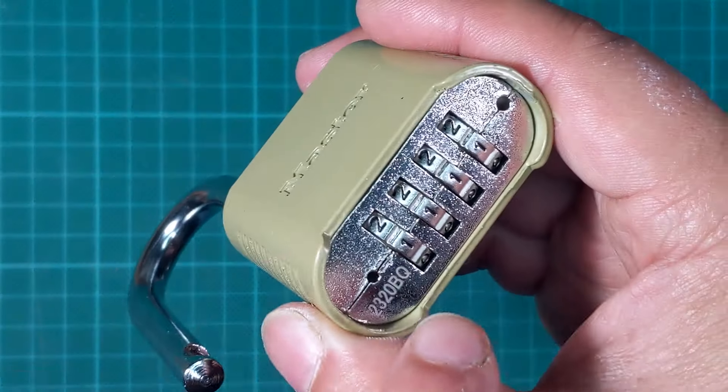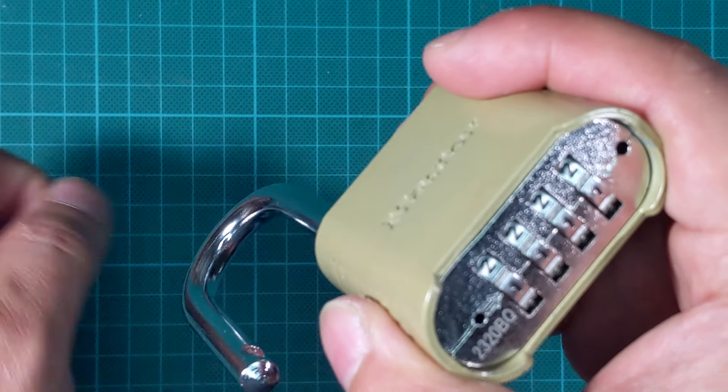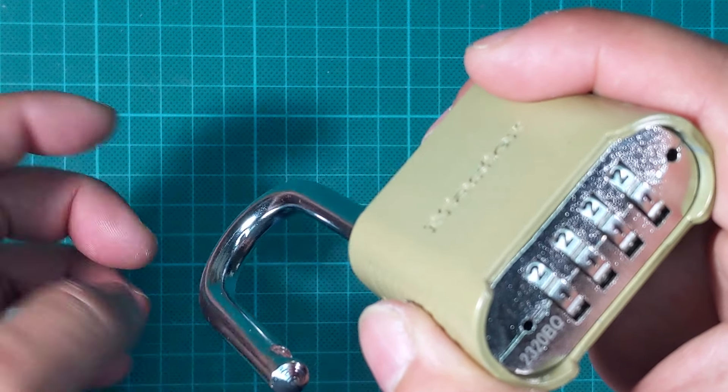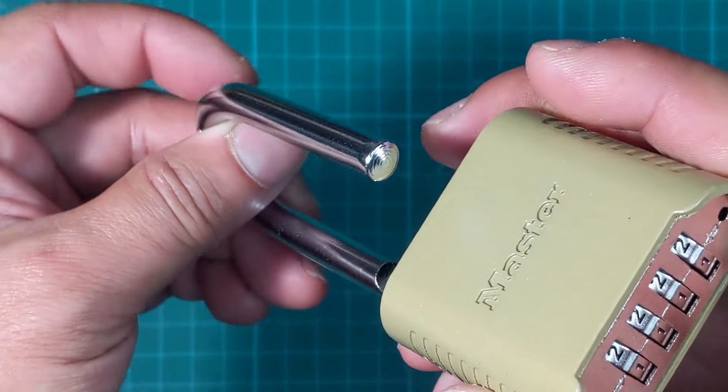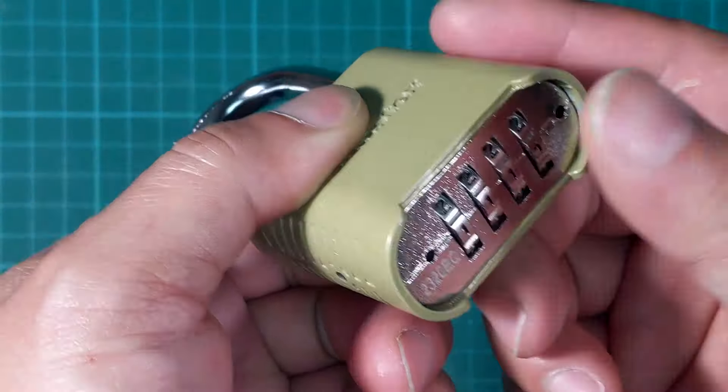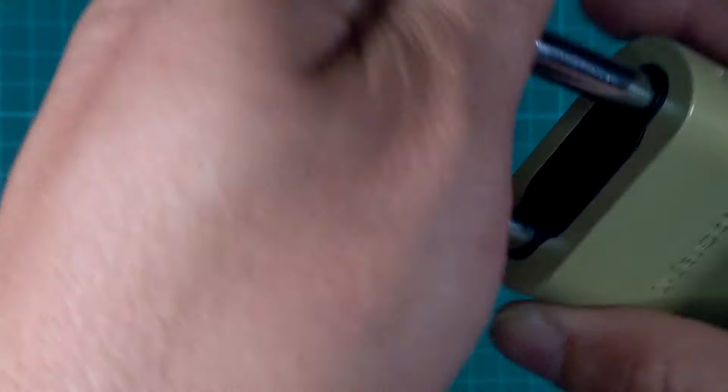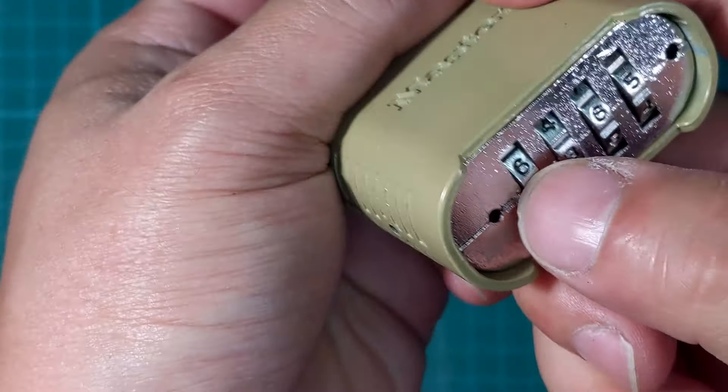Now I got it set to 1111. I'm going to pull it down, which means that I unshackle it or unlocked it, and then I'm going to go ahead and lock it. Now it's 1111. Let's test it out.